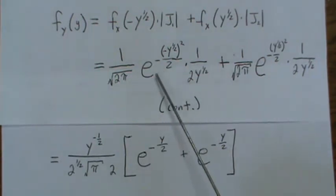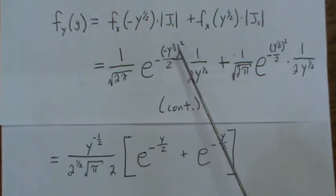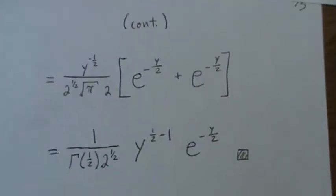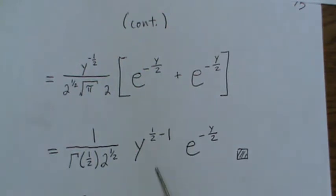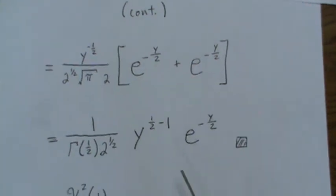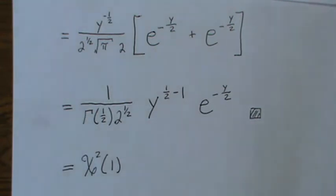And then that just leaves e to the... this is Y to the one-half, but it's squared, so it's just Y. And it's the same, because when you square a negative, you get the same. So there are two of these. So it's 2 times one of those, and that 2 will cancel with this 2. And it leaves this. Now, I rewrite this Y to the one-half as Y to the one-half minus 1, because then this is set up in the form of a chi-square distribution with one degree of freedom. So the square of a standard normal is chi-square one.